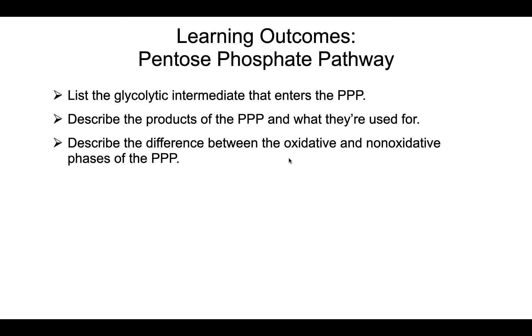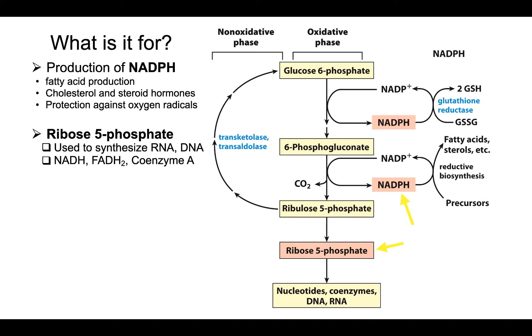So here is the pentose phosphate pathway in a nutshell. The two important products are ribose 5-phosphate